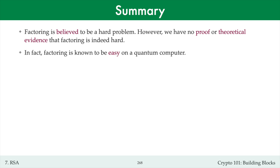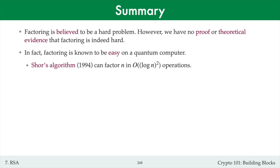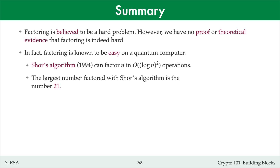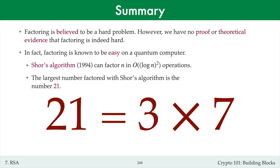On the other hand, factoring is known to be easy on a quantum computer. This is due to an algorithm discovered by Peter Shor in 1994. Shor's algorithm is a polynomial time algorithm. We don't know if and when cryptographically relevant quantum computers will be built. In fact, the largest number factored with Shor's algorithm to date is the number 21, which is 3 times 7.